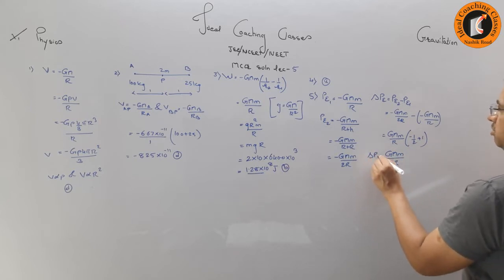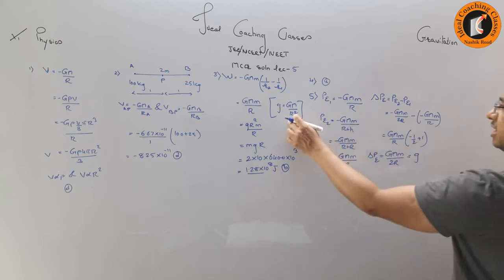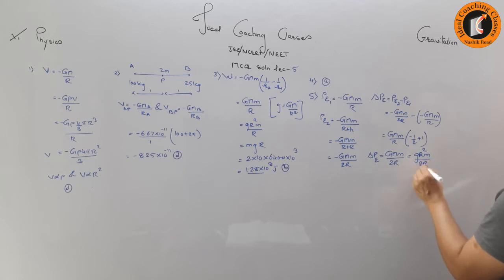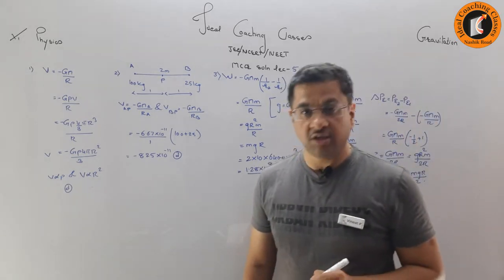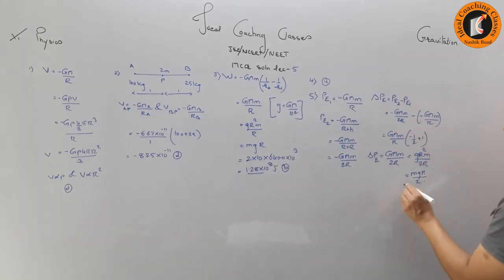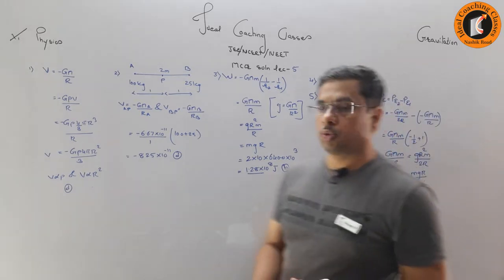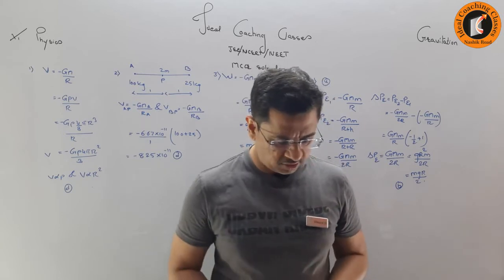Since the options don't have GMm/2r, we substitute GM = gr², giving gr²m/2r = mgr/2. So the gain in potential energy is mgr/2, which is the second option, option B.